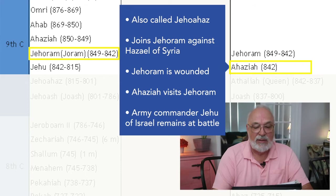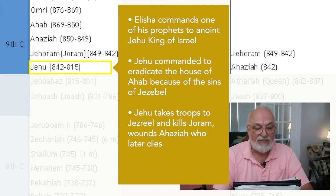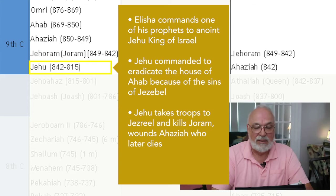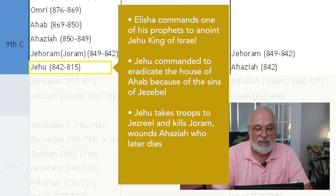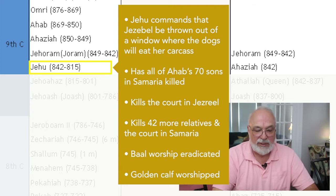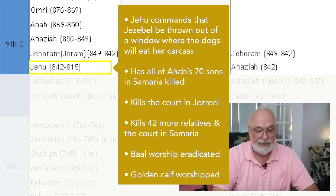Elisha commands one of his prophets to anoint Jehu king of Israel. Jehu is commanded to eradicate the house of Ahab because of the sins of Jezebel. Jehu takes a troop of men to Jezreel where Joram is recovering and Ahaziah is visiting. They come out to meet Jehu. Joram is killed; Ahaziah is wounded and dies later. Jehu commands that Jezebel be thrown out of the window, where the dogs eat her carcass. Jehu has Ahab's 70 sons killed in Samaria and also kills all the court in Jezreel.